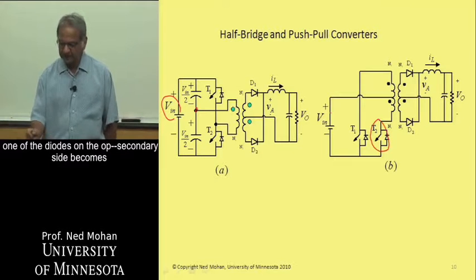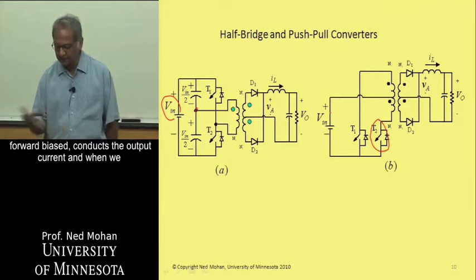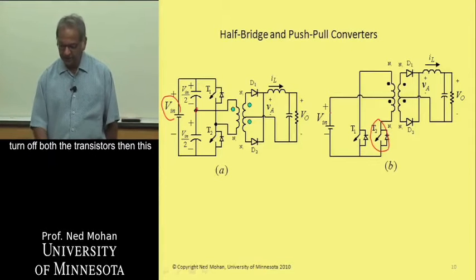for example, here, one of the diodes on the secondary side becomes forward biased, conducts the output current, and when we turn off both the transistors,